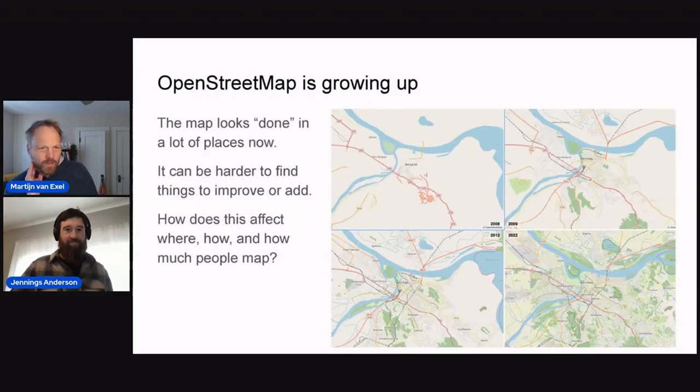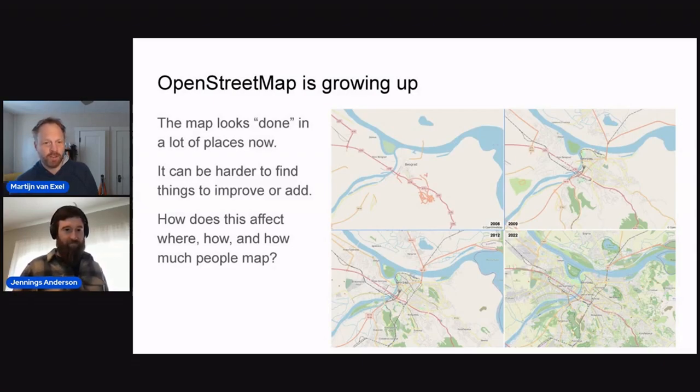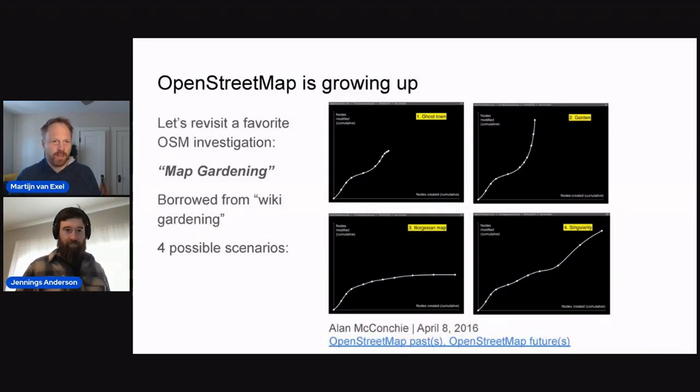So let's take it away. Just as an introduction, so OpenStreetMap is growing up. We're 18 years old now and things have changed. As Minh showed also at the beginning, the map looks really barren and it's really filled out in most places, right? Wherever you go in the world, there's almost everywhere a map now that looks decent. So it can be harder to find things to improve or add. So we were wondering, how does that affect where, how, and how much people map? And that's what this talk is really about.